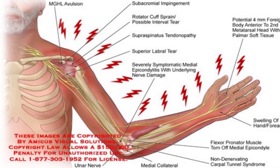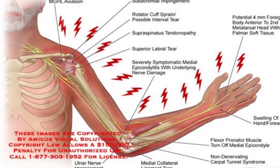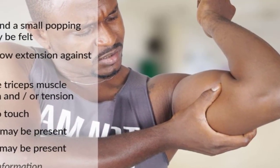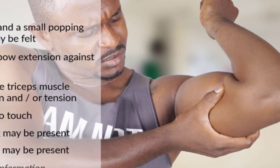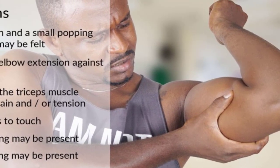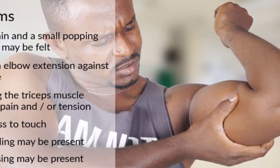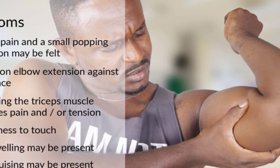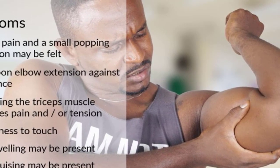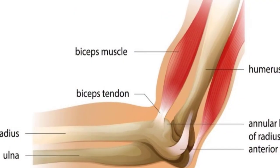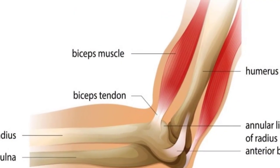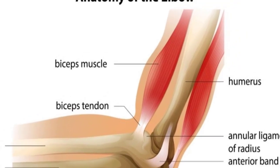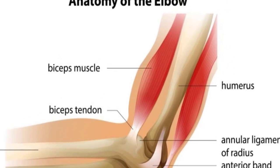Mild strains may heal within one to three days, while severe strains may take a few months to heal. Upper arm muscle strains may occur with heavy lifting or repetitive use of your arm. Pain from these strains typically increases with activity and decreases with rest. Severe strains may cause bruising on the skin of your upper arm.